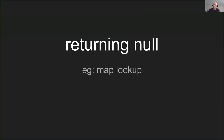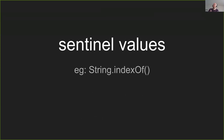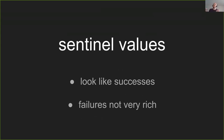We've got returning null - for example, if you look in a map for something and it's not there, it gives you back nothing. We've all heard Tony Hoare's thing about null being the billion dollar mistake. It's insidious, it manifests late. You can end up having a function six or seven calls out in the call stack before it actually manifests, so you don't know where the null came from. And there's no detail as to what failed or how it failed. There are sentinel values - String.indexOf, for example, if you want to find the first 'f' in a string, gives you the index, but if it's not there it gives you minus one. The return value looks like a success, but you need to know there's something special about that value.